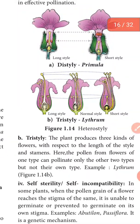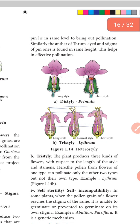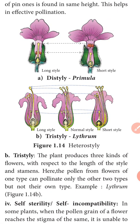The third type is tristyly. Based on the length of the style and stamen, the plant produces three kinds of flowers. The pollen from one type of flower can pollinate the other two types but not their own type. Example: Lythrum — three kinds of flowers are present, where pollen grain from one type reaches two different kinds of stigma but not the same kind of stigma.